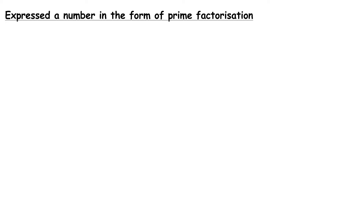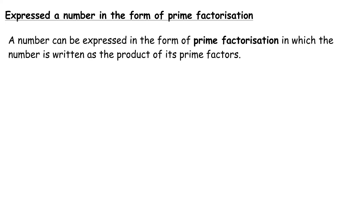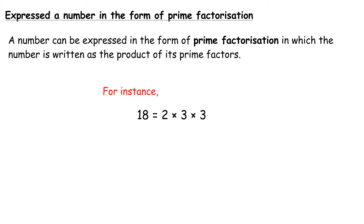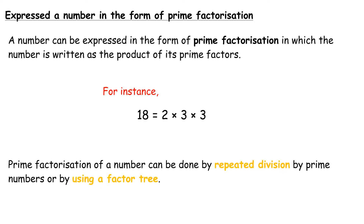Expressing a number in the form of prime factorization: a number can be expressed in the form of prime factorization, in which the number is written as the product of its prime factors. For instance, 18 can be expressed as 2 times 3 times 3. Prime factorization of a number can be done by repeated division by prime numbers or by using a factor tree.